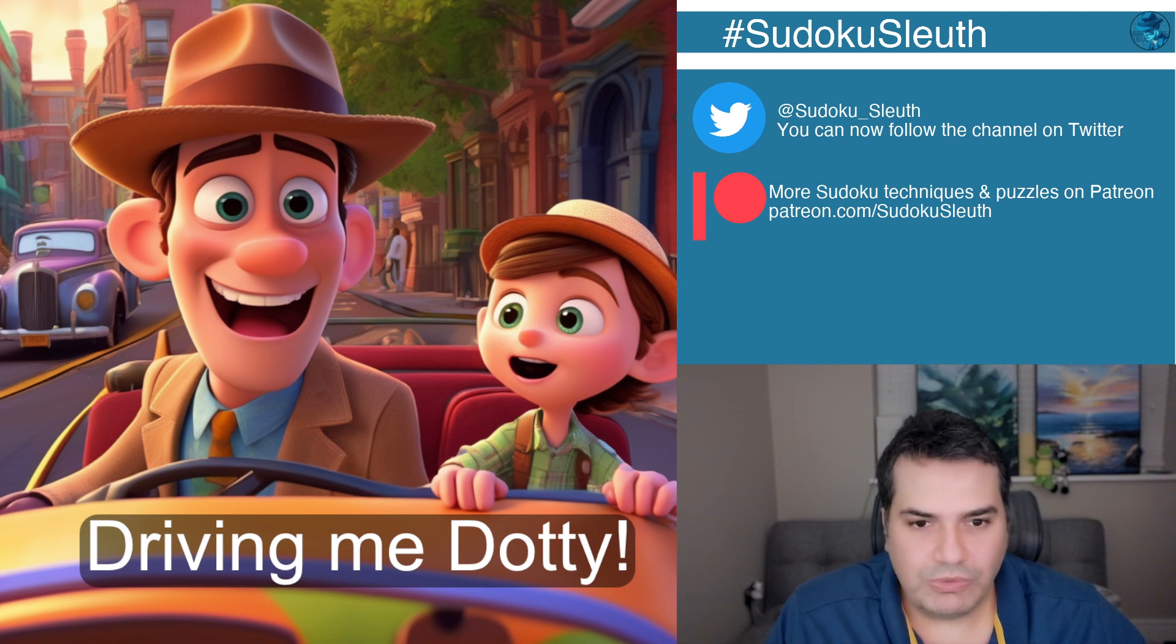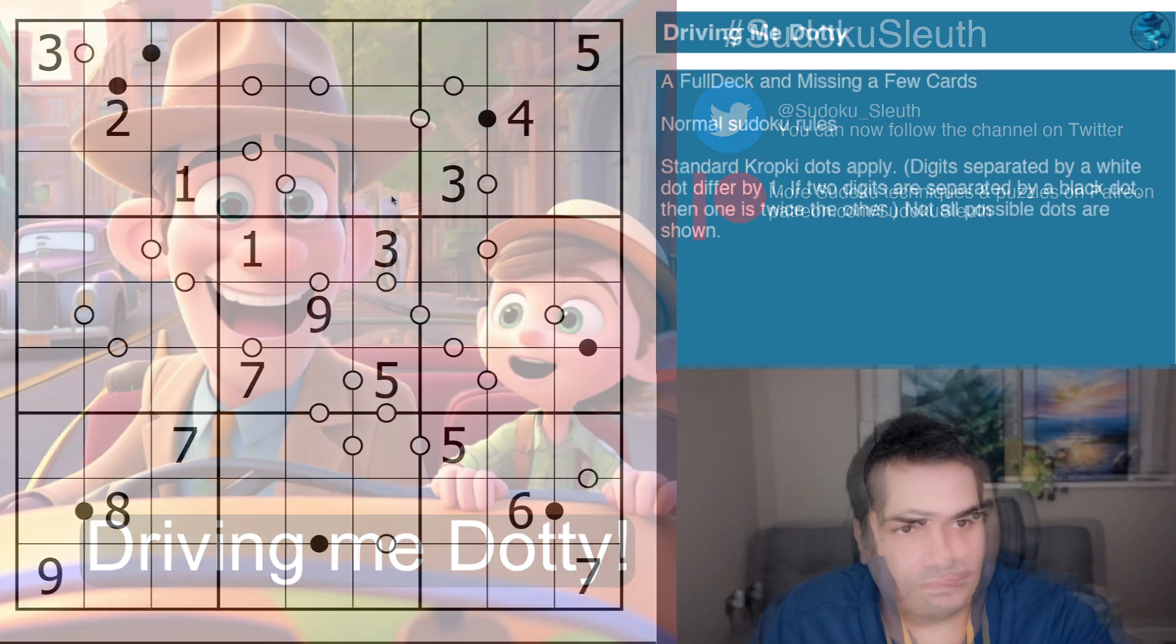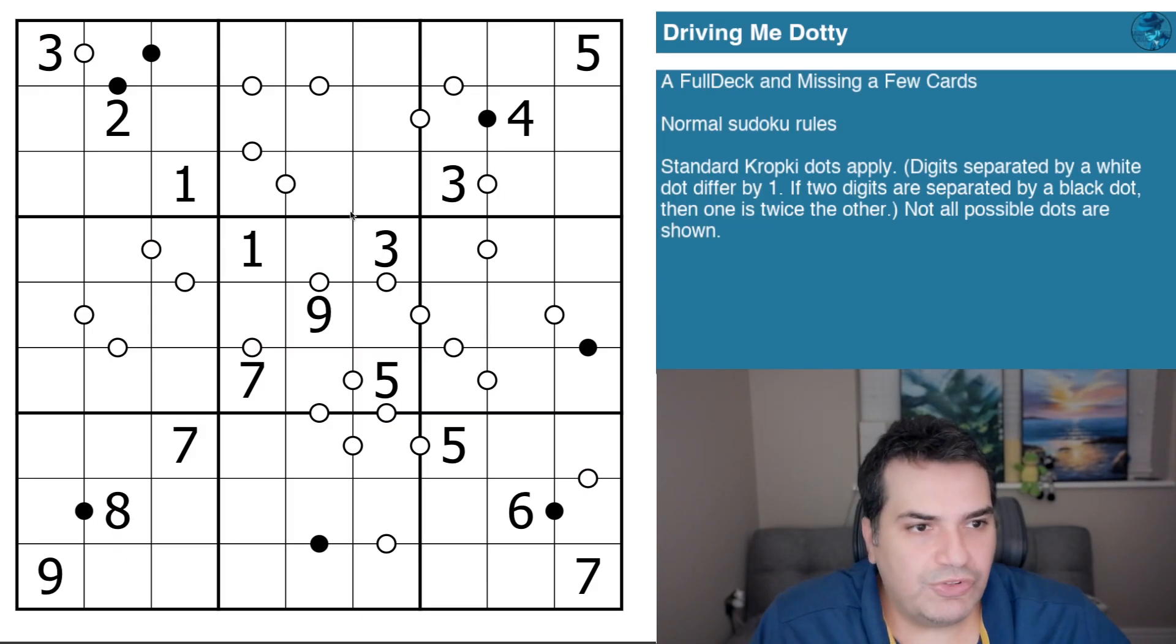We have a Full Deck and Missing a Few Cards puzzle with another highly approachable Sudoku variant. The rule sets that we are continuing with seems to be Kropki dots. I'm working through these puzzles in chronological order and there seems to be very much a focus on Kropki dots. This is clearly about making sure that this particular variant of a puzzle is very familiar with our viewers.